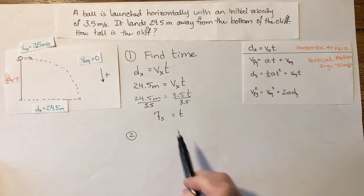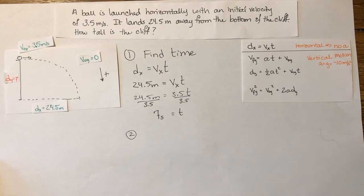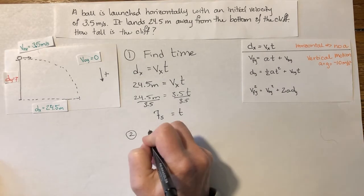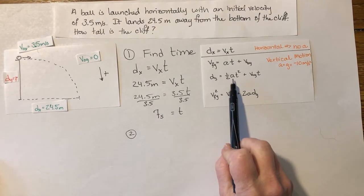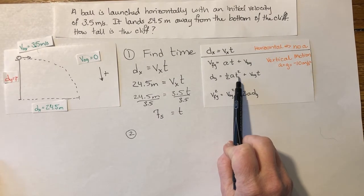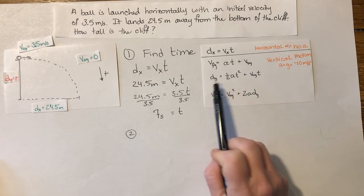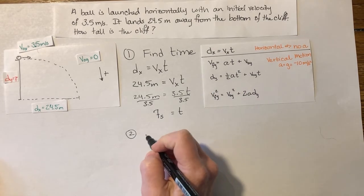Now that I have time, I can use time and my other known values to figure out what the height is. So I'm going to look at my equations and say, okay, I know acceleration. I now know time. And I'm going to find displacement in the y direction.